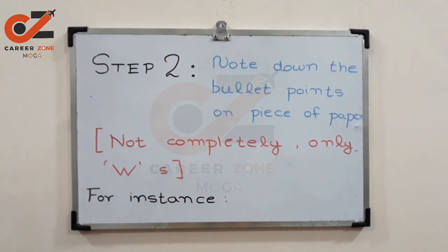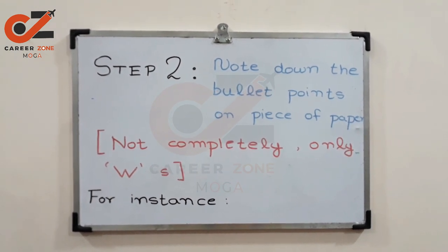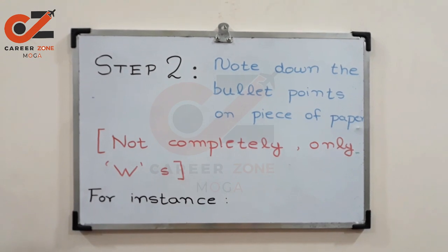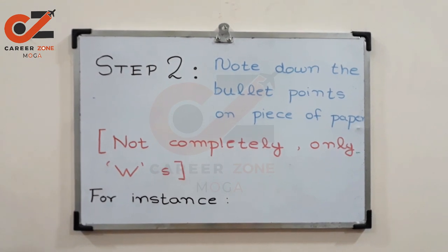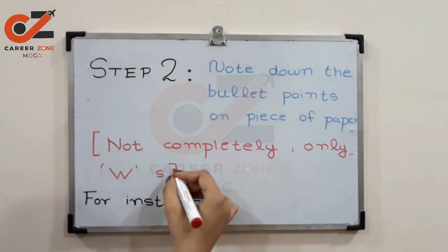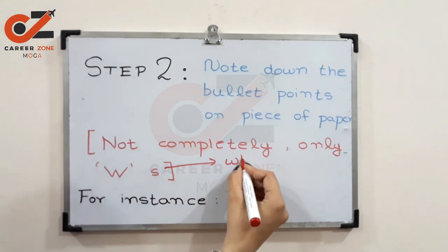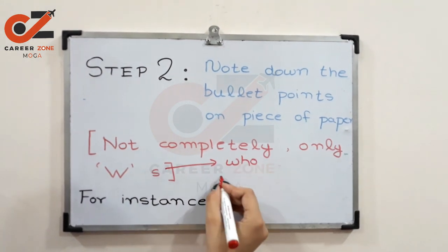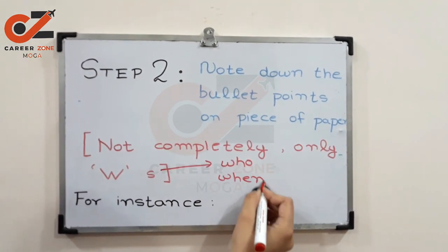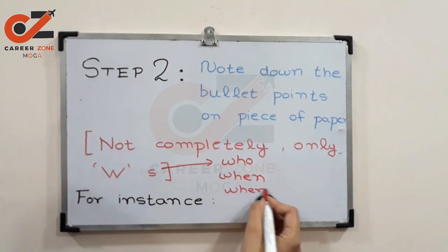Now let's move on to step two. Our second step is to note down the bullet points on the piece of paper. You don't have to write the bullet points completely — only write the W's. I'm talking about: who, when, where, and why.